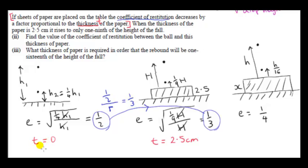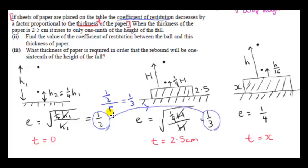I'm trying to figure out the relationship between the situation when t is zero and when t is 2.5, and then extrapolate to the relationship between the thicknesses when t goes from 2.5 to the new thickness we have to find. Something decreases by a factor means that when we divide one half by the reduction factor, we get one third. So R equals one half divided by one third, which is three halves.